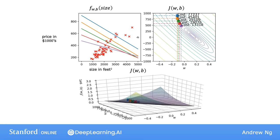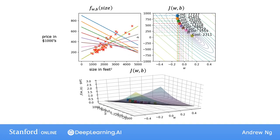As you take more of these steps, the cost is decreasing at each update. So the parameters w and b are following this trajectory. And if you look on the left, you get this corresponding straight line fit that fits the data better, better and better, until we've reached the global minimum.